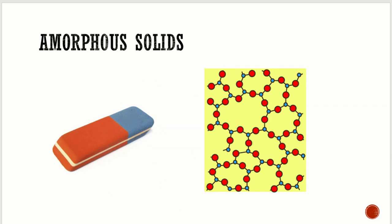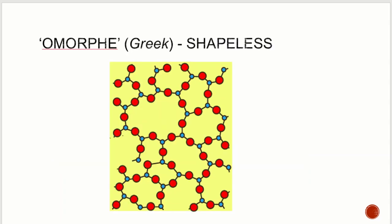The word amorphous is derived from the Greek word 'amorph', which means shapeless. In amorphous solids there is a random arrangement of the constituent particles. There is also a regular arrangement of particles in small regions only, and this is what we call the short-range order.